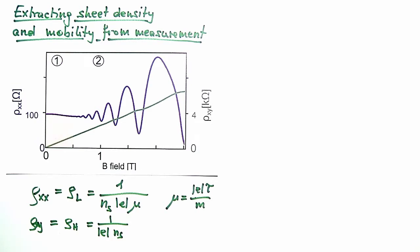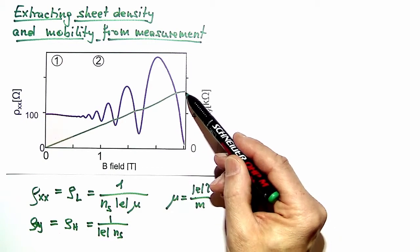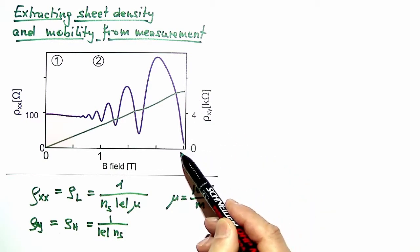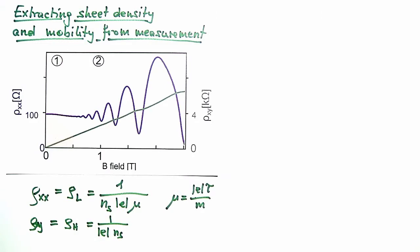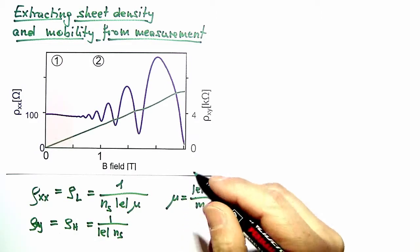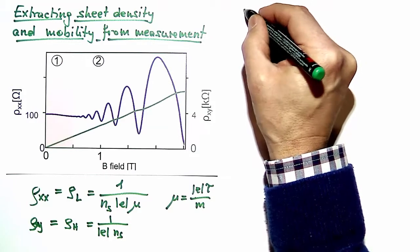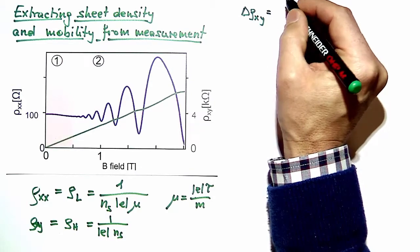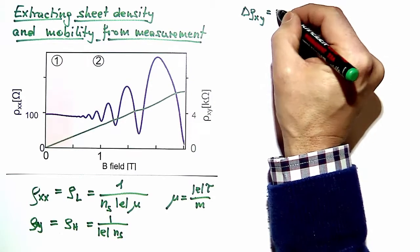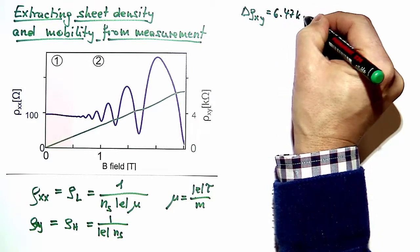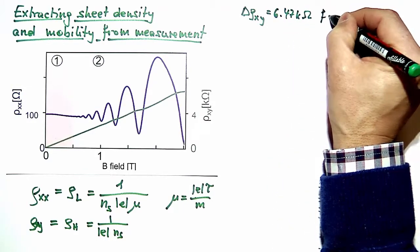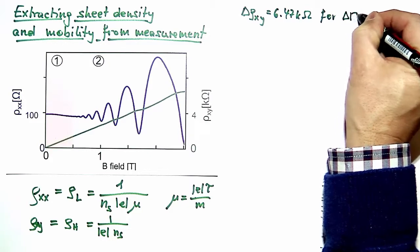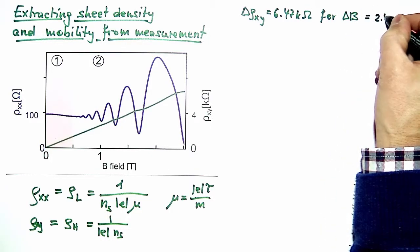So from the graph we do it step by step. We extract first of all the change in the Hall resistivity rho_xy over this field range of 2.5 tesla. And if you do that with a ruler in a more careful way, then you find values delta rho_xy of 6.47 kilo-ohms for a change in magnetic field delta B which is 2.5 tesla.